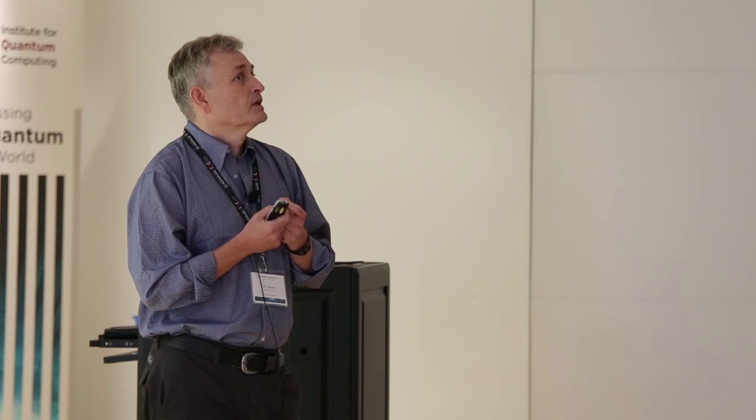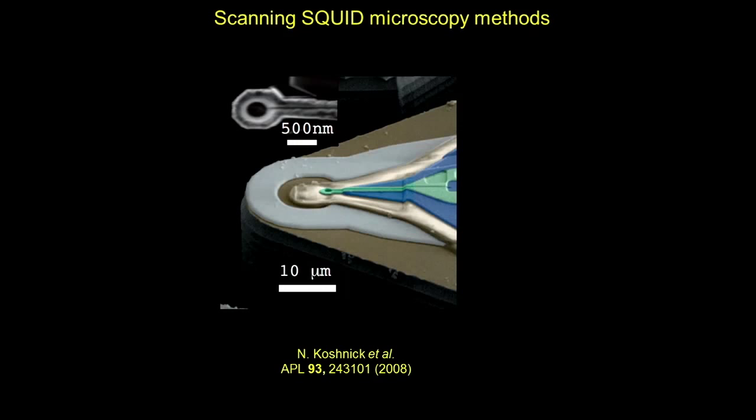Another important point is that in nitrogen vacancies, the closer you get, the better sensitivity you have, and there is essentially no cutoff — or the cutoff would be at atomic scale. Here you have a natural cutoff, which is the radius of your device. So in principle, you don't need to get closer to the spin than the size of your device, which in some situations can be another advantage.